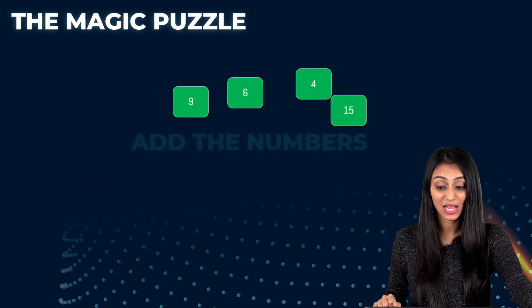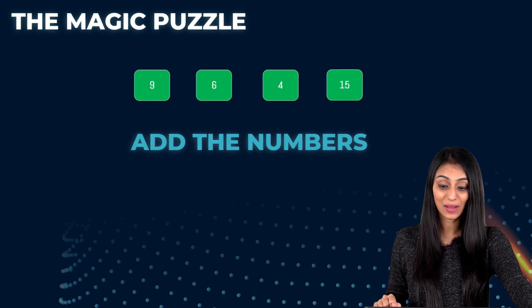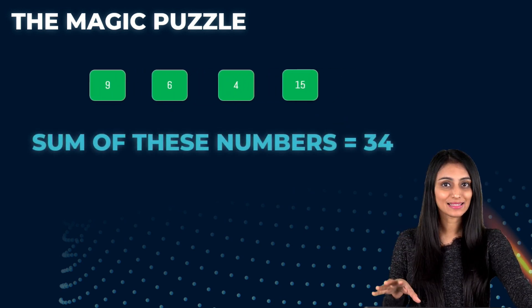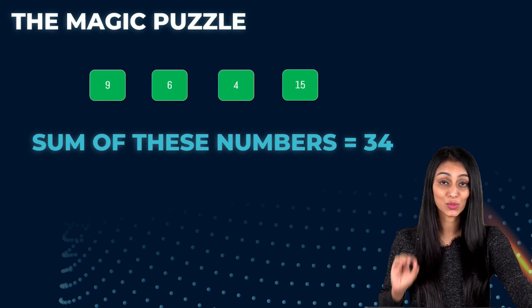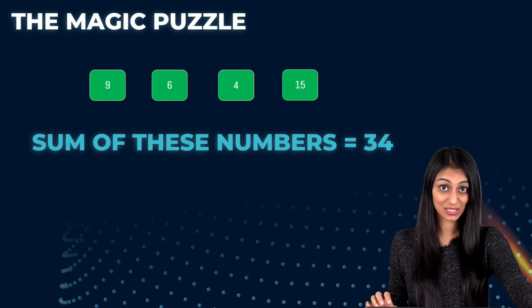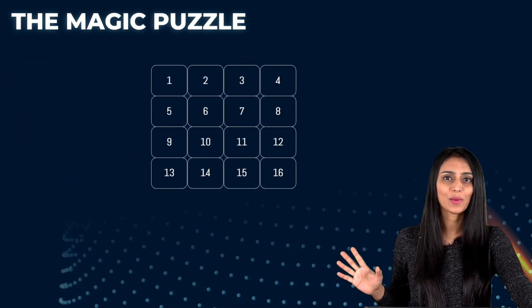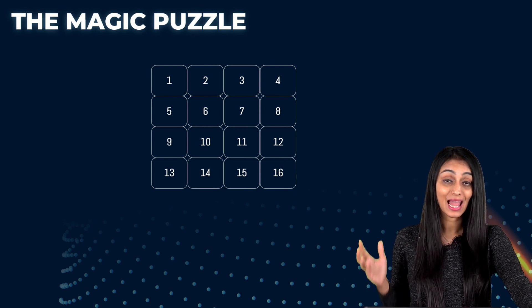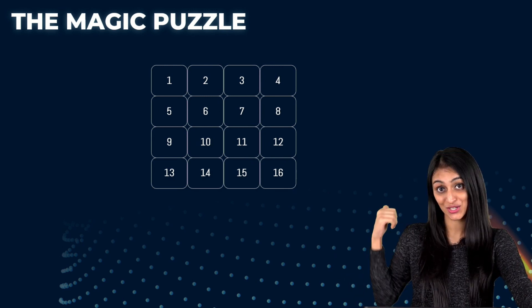Now what we need to do is we have to simply add these numbers up and their sum would be equals to 34. Like this whatever numbers you have picked you can see that their sum would always be 34. Whatever numbers you pick the answer will always be the same. And this is what this magical puzzle is about.